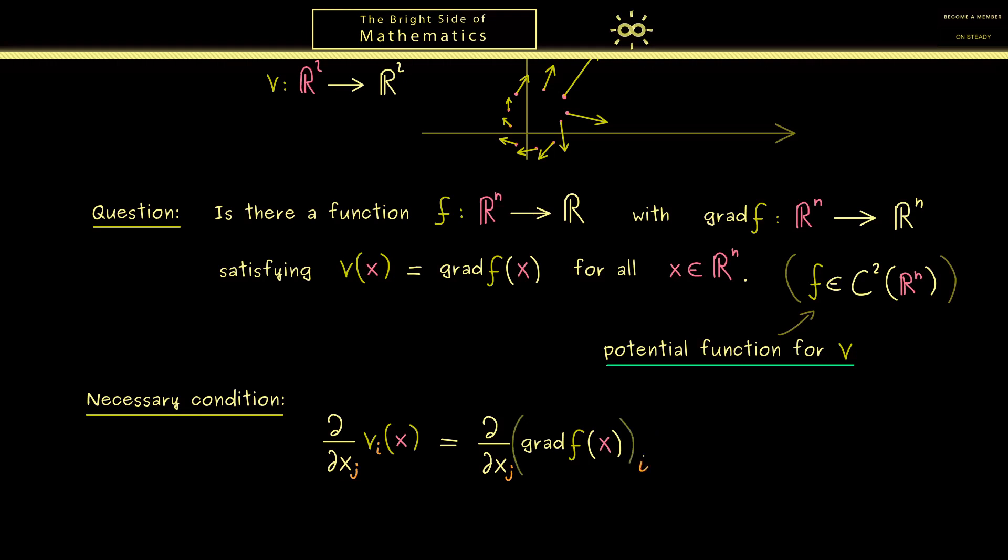In other words, instead of the gradient, we can write a partial derivative here. So this thing here is the partial derivative of f with respect to x_i. And then you see, exactly at this point, we can use Schwarz's theorem. This means we are able to exchange the order of the partial derivatives without changing the result.